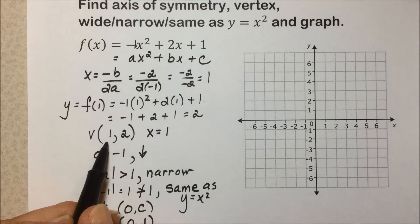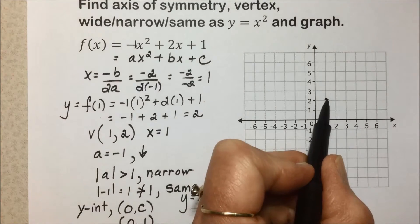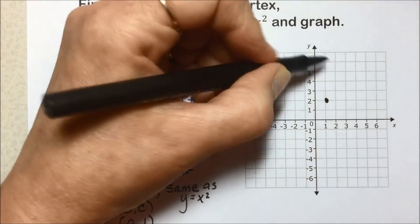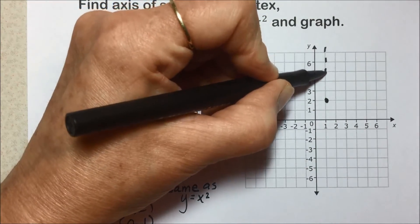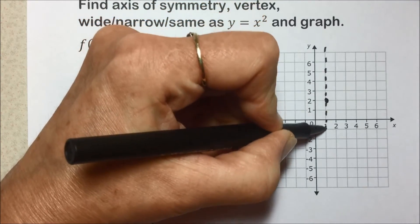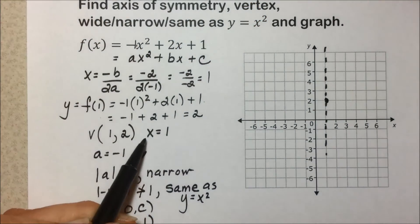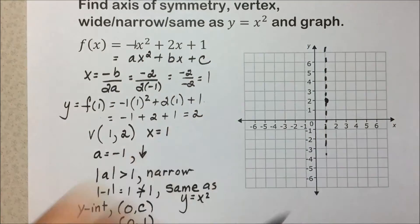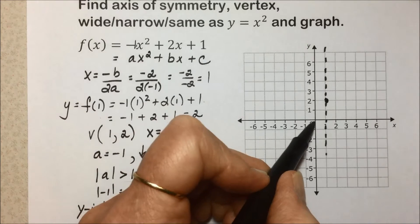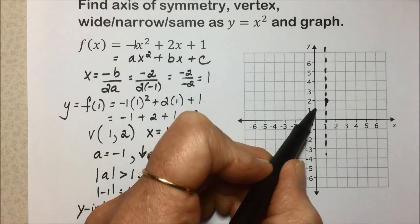So taking these components, let's make a graph for this quadratic function. We have a vertex at (1, 2). The axis of symmetry is running through the vertex. It's at the line x = 1, a vertical line.